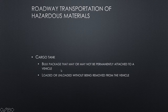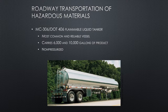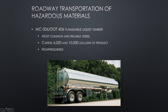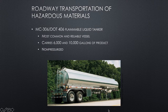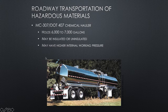Cargo tanks are bulk packages that may or may not be permanently attached to a vehicle. They're loaded or unloaded without being removed from the vehicle. A flammable liquid tanker, for example, is often carrying gasoline or liquid food-grade products. These oval-shaped tanks are pulled by diesel tractors and can carry 6,000 to 10,000 gallons. It's very common to have a leak — and a fire — with these vehicles, because gasoline is pretty combustible with very little ignition source.